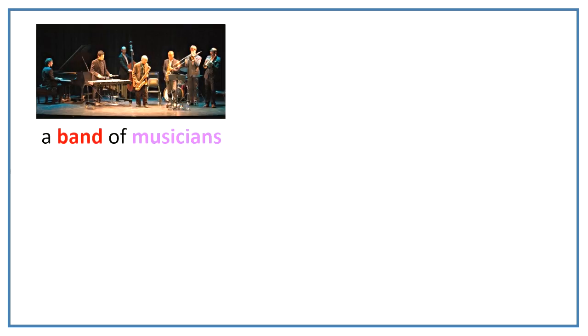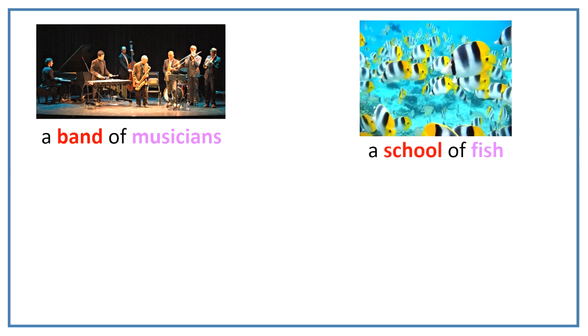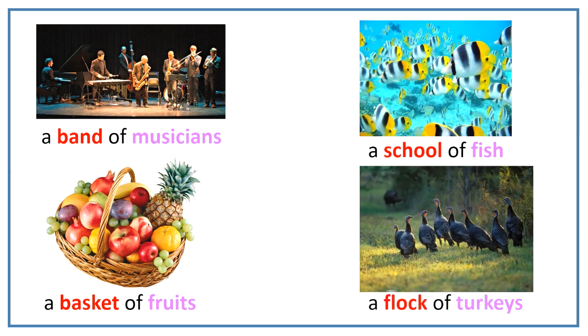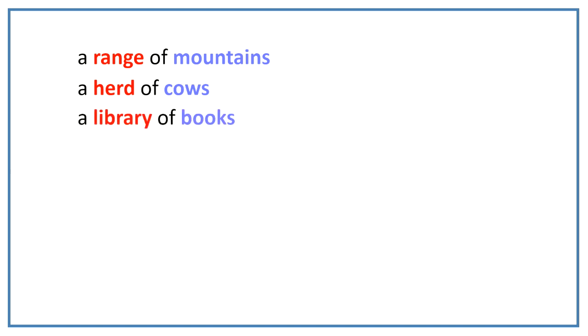Let us see few more collective nouns like a band of musicians, a school of fish, a basket of fruits, a flock of turkeys, a range of mountains, a herd of cows, a library of books, a galaxy of stars, a gang of thieves.